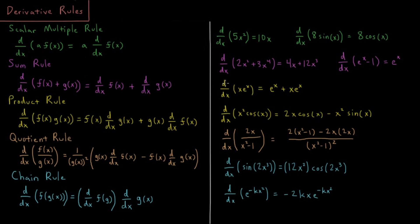Showing some examples: d/dx of x·e to the x — the derivative of x is 1, and the derivative of e to the x is e to the x. So 1 times e to the x gives us our first term, and then e to the x times x gives us x·e to the x.